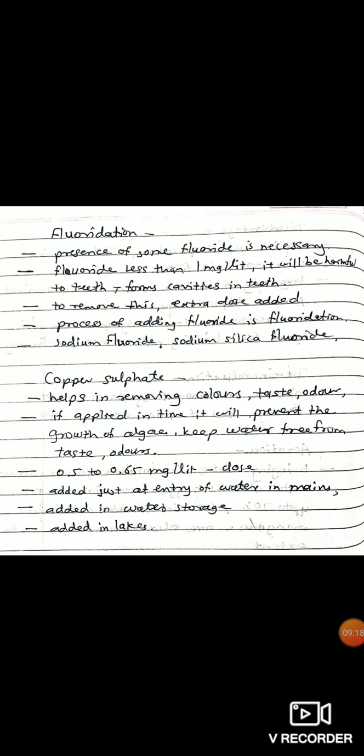Next topic is treatment of water with copper sulphate. Copper sulphate helps in removing colors, taste, and odors from water. The main advantage of copper sulphate is it checks the growth of algae even before its production and it kills some bacteria.